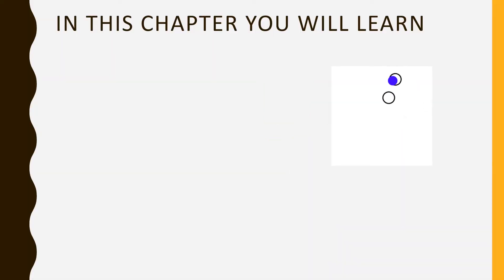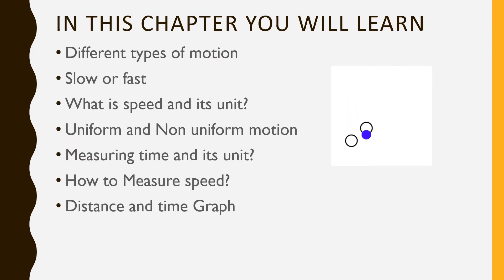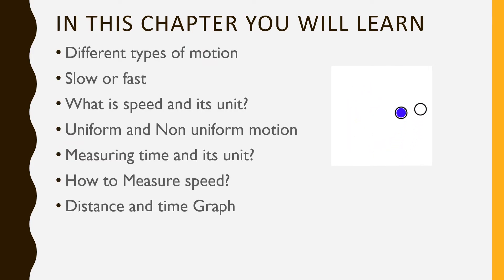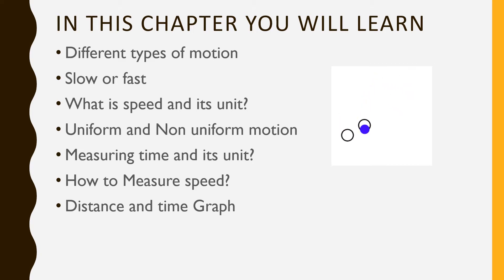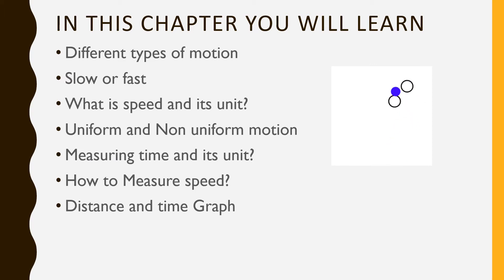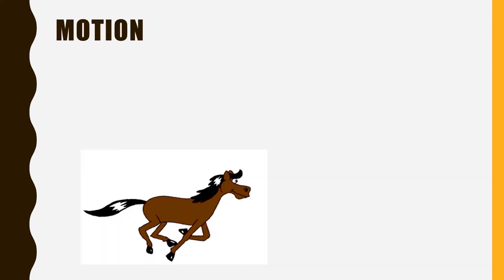In this chapter, you will learn about different types of motion — slow or fast, what is speed and its unit, uniform and non-uniform motion, measuring time and its unit, how to measure speed, and the distance and time graph. So let's move on.